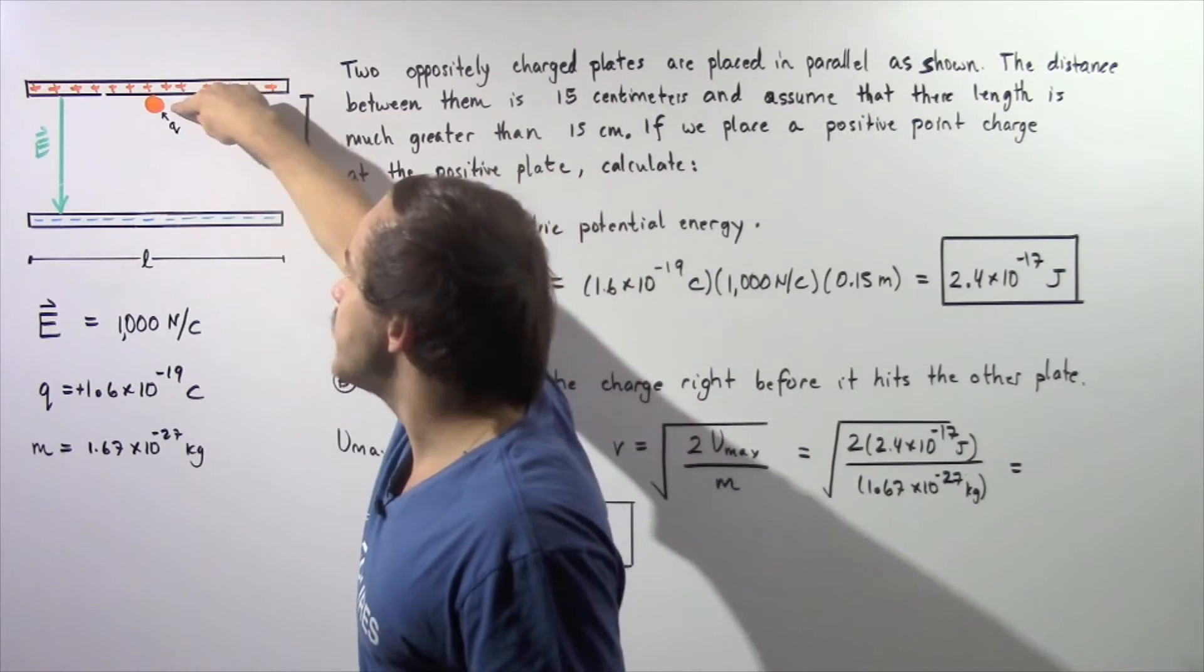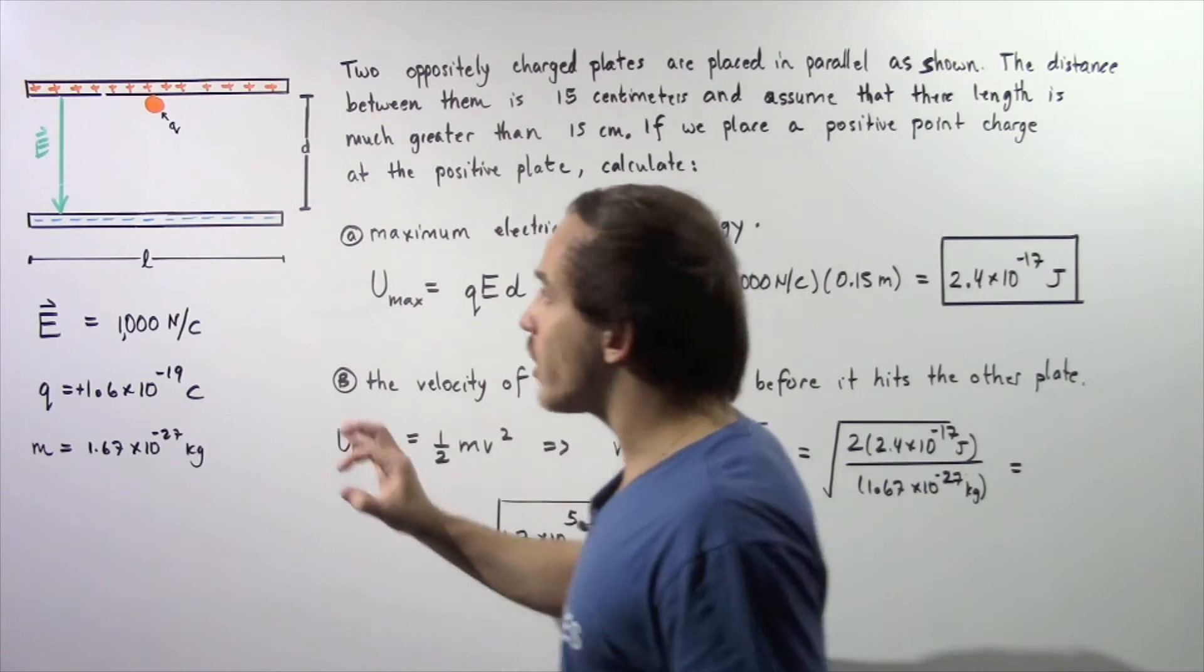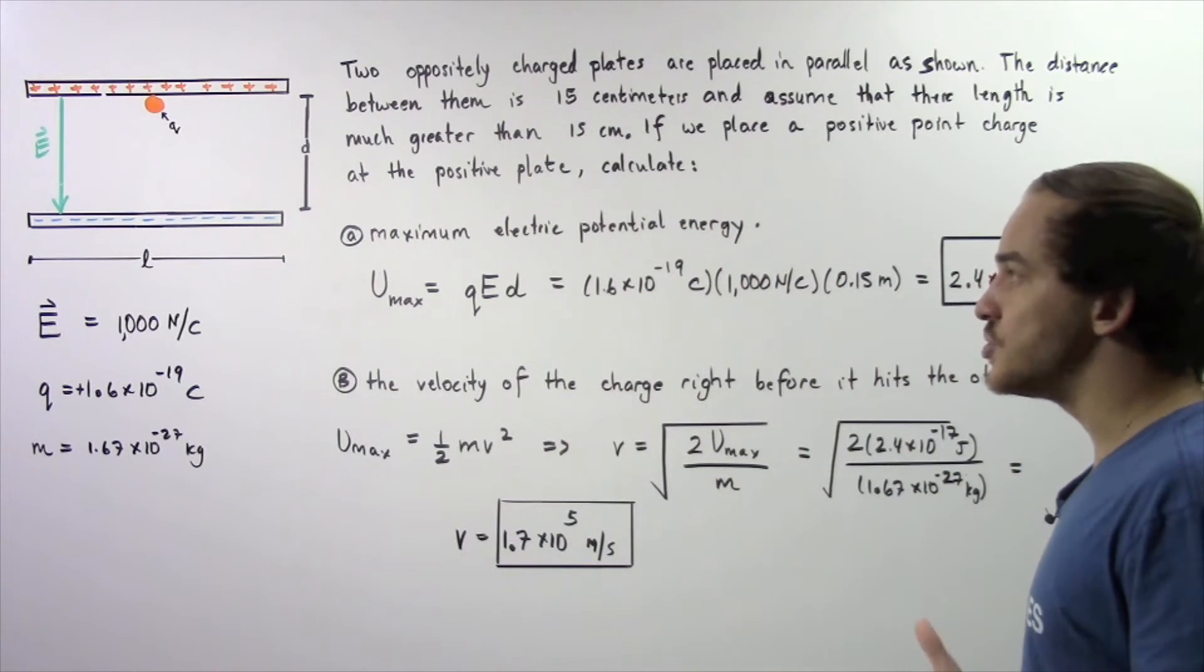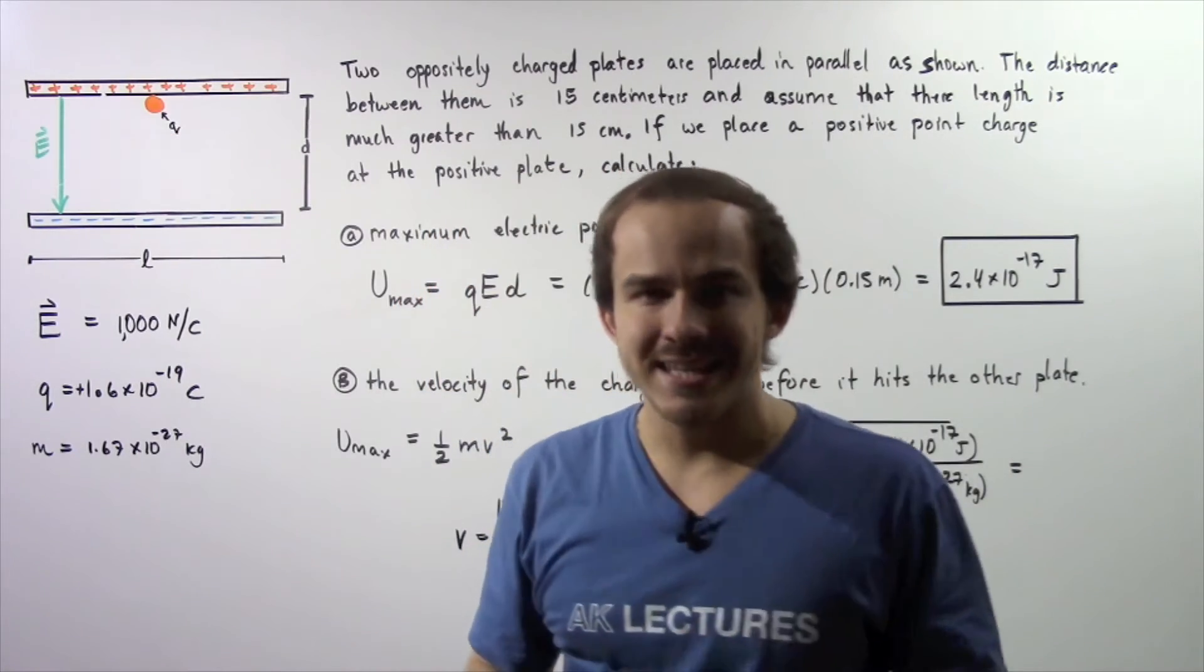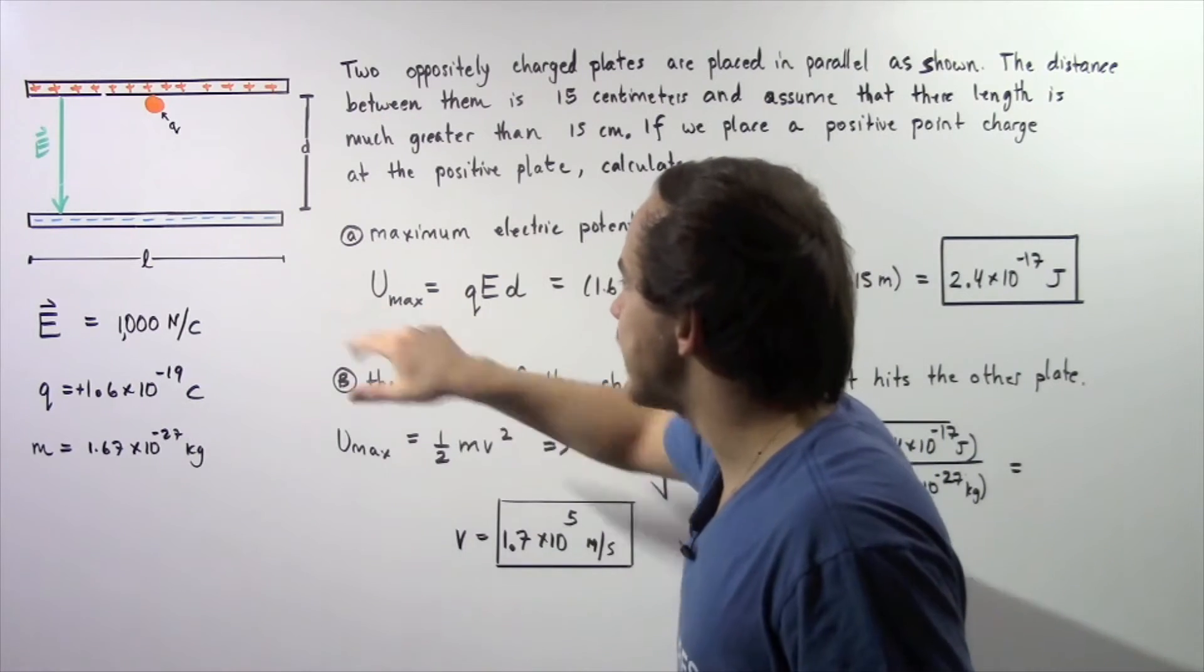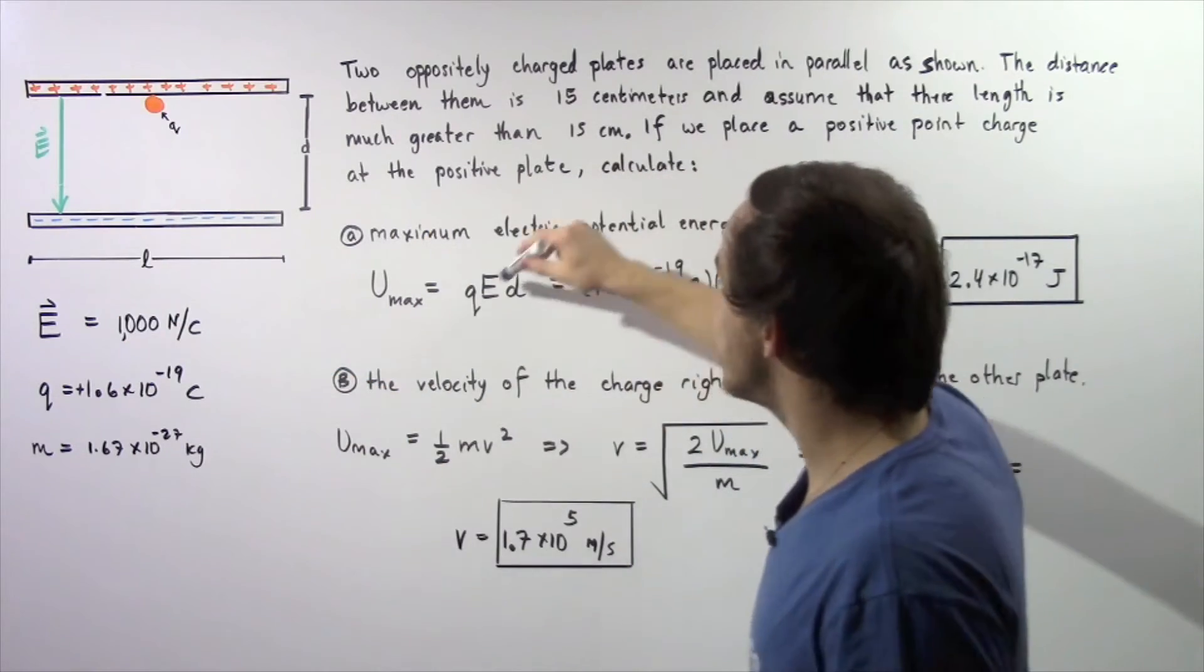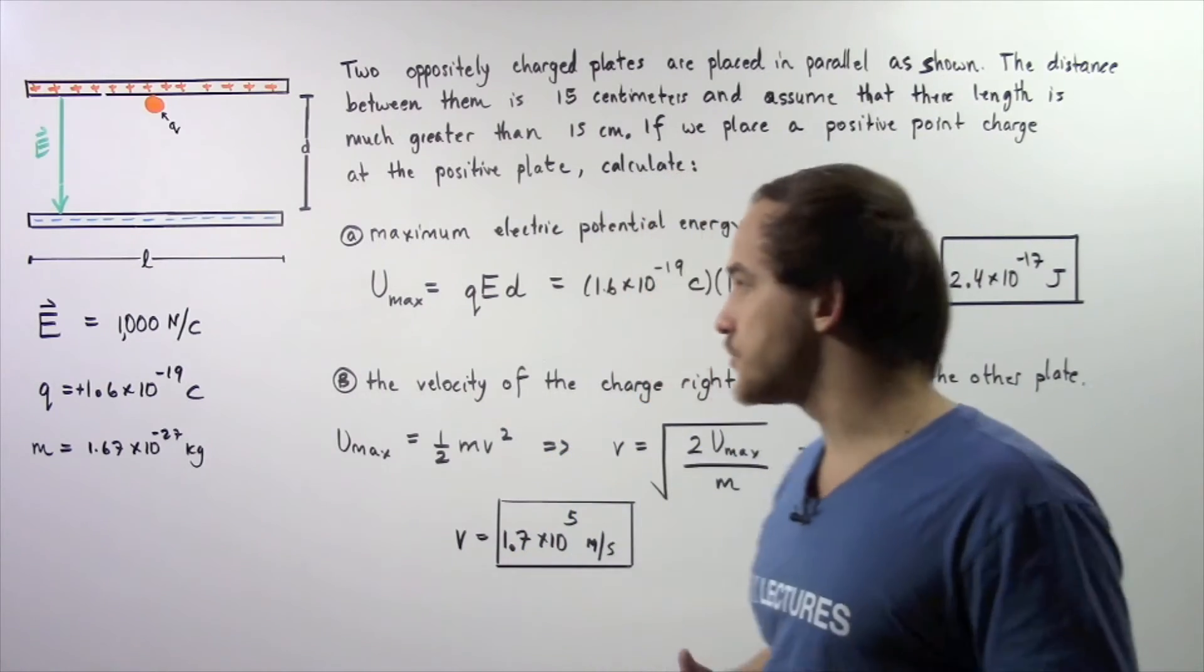When it's found at this position, right before it hits this negatively charged plate, it has a minimum electric potential energy. Let's suppose the potential energy at that point is zero. That means the maximum electric potential energy of our charge is equal to the product Q times E times D, where D is our distance between our two plates given in meters.